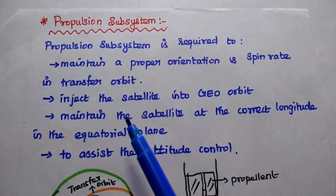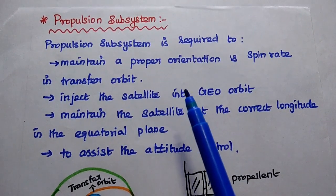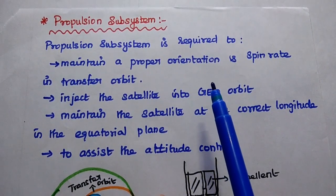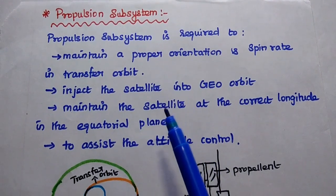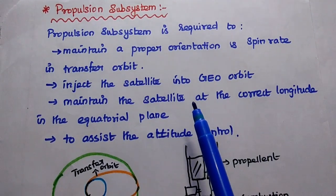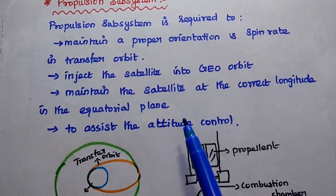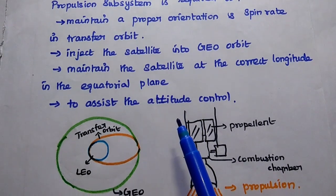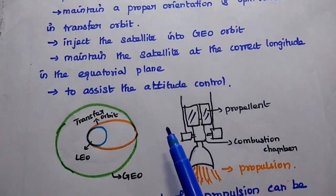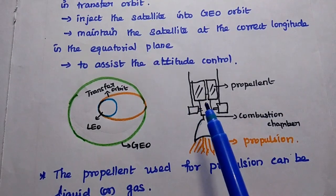Propulsion subsystem is required to maintain the proper orientation and spin rate of the satellite in transfer orbit, to inject the satellite into geostationary orbit, to maintain the satellite at the correct longitude in the equatorial plane, and finally, to assist the attitude control. These are the functions of propulsion subsystem.